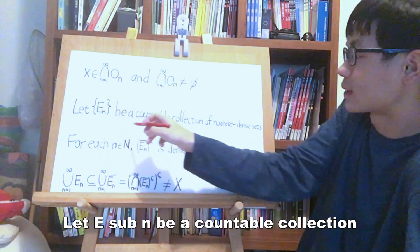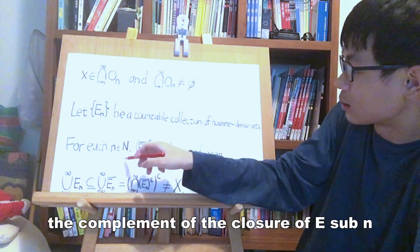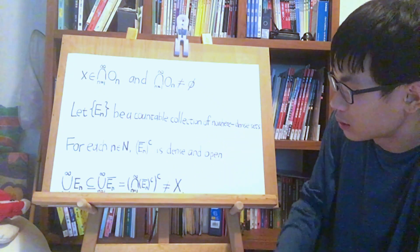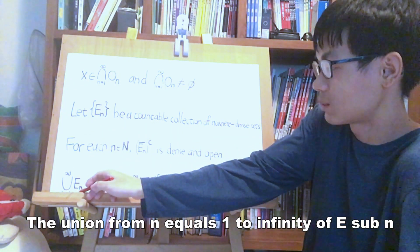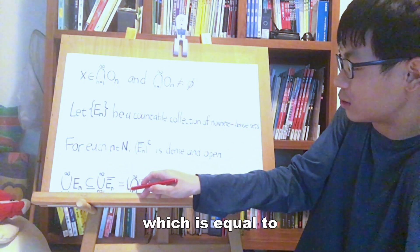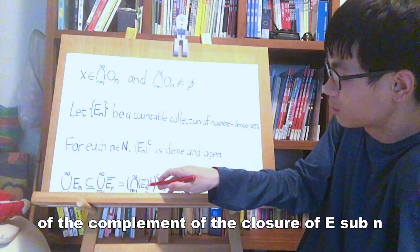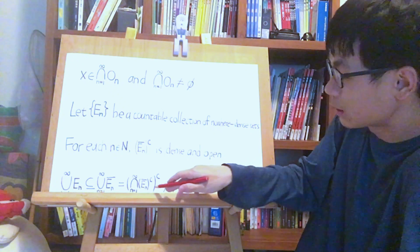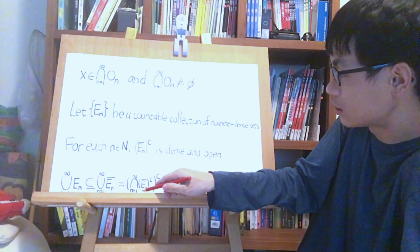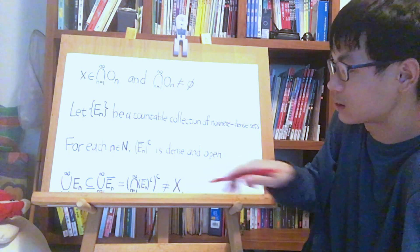Let E_n be a countable collection of nowhere dense sets. For each n in the natural numbers, the complement of the closure of E_n is dense and open. The union from n equals 1 to infinity of E_n is contained in the union from n equals 1 to infinity of the closure of E_n, which equals the complement of the intersection from n equals 1 to infinity of the complement of the closure of E_n, by De Morgan's law. Because the intersection from n equals 1 to infinity of the complement of the closure of E_n is not empty, its complement is not all of X, completing the proof.